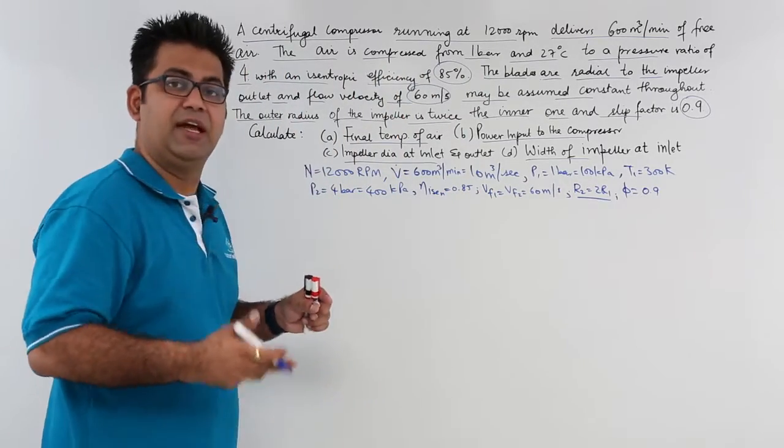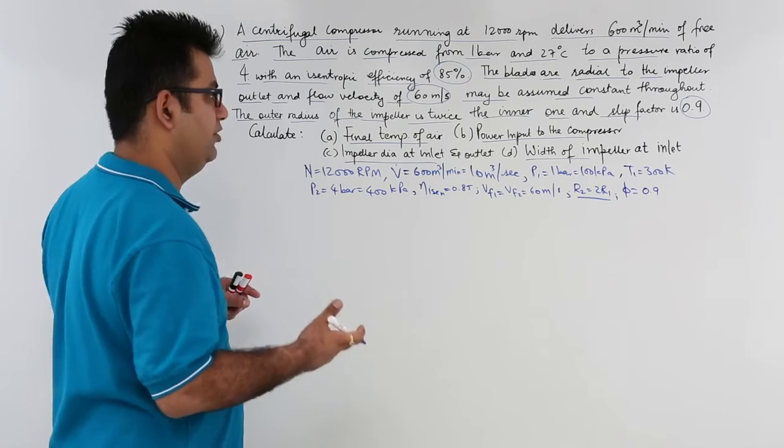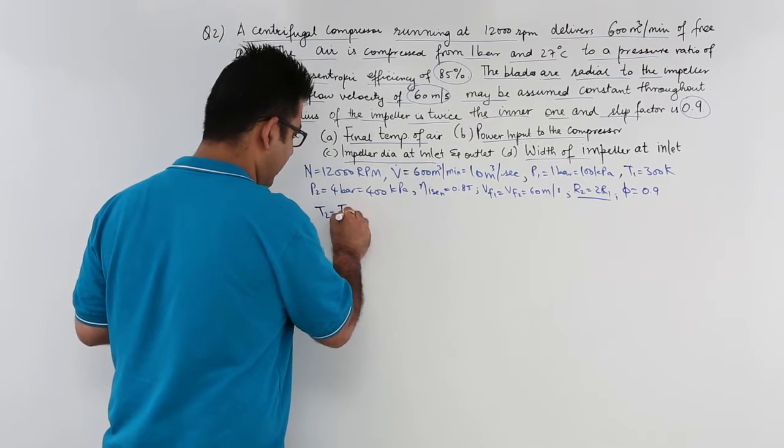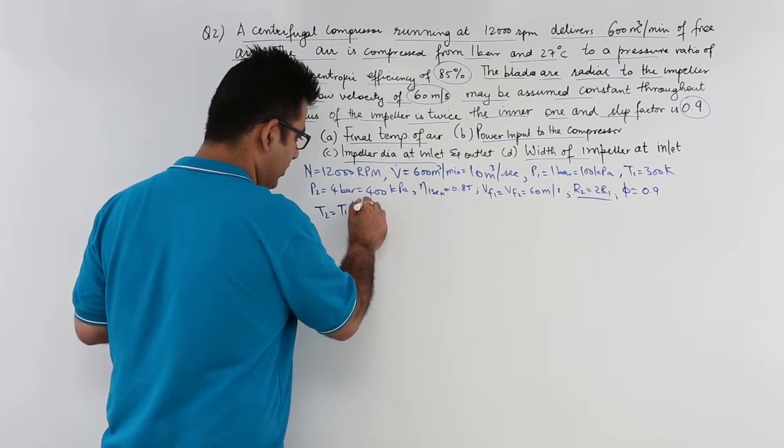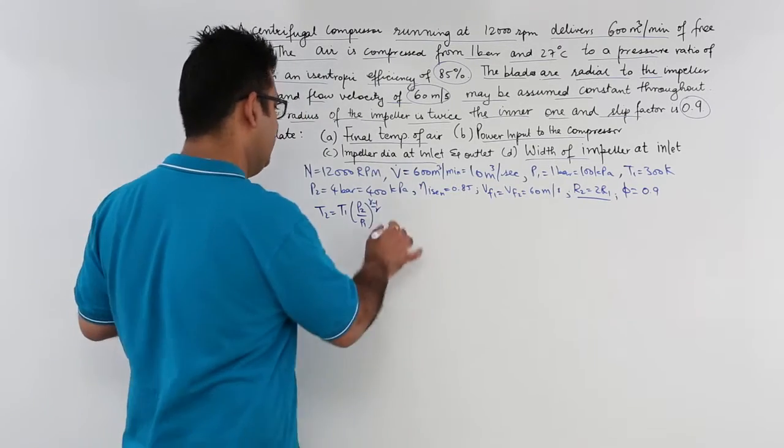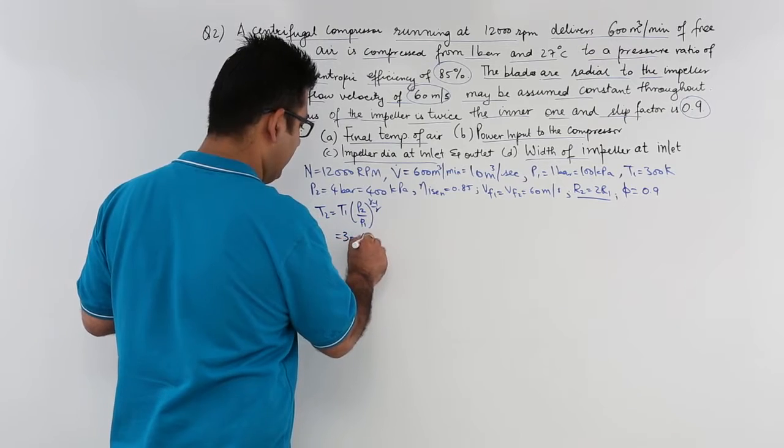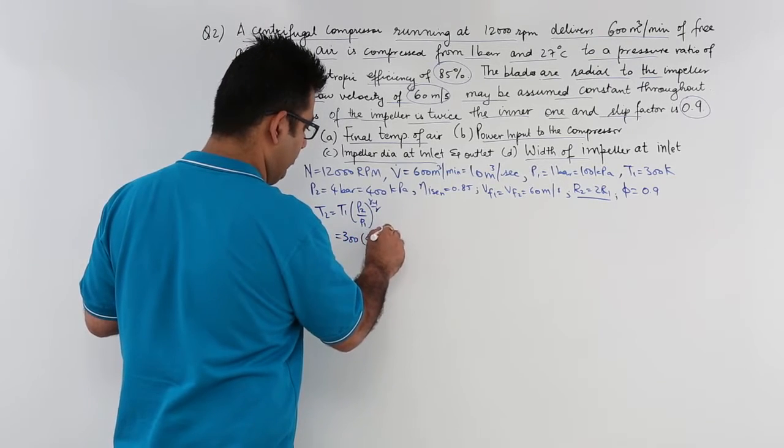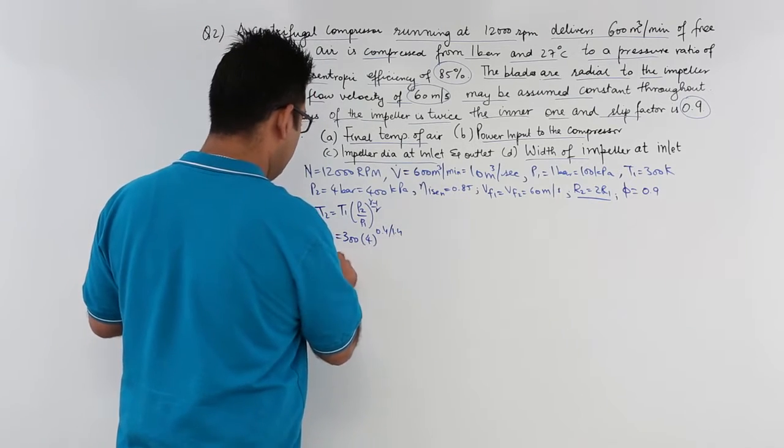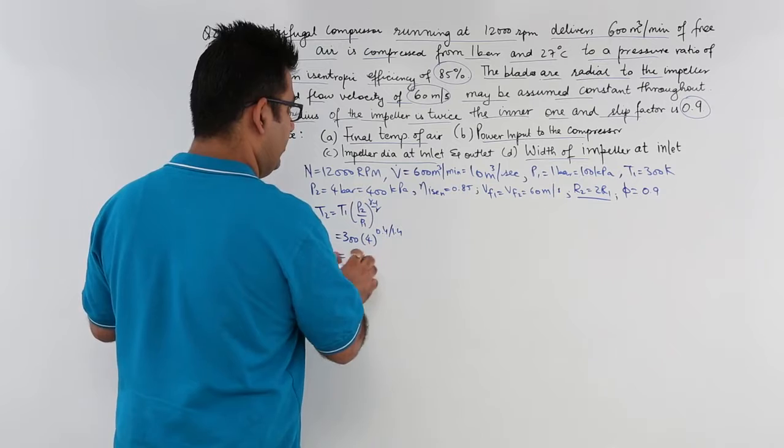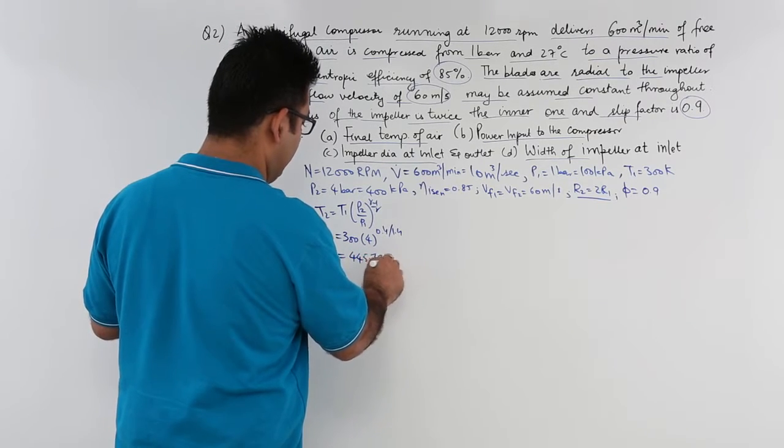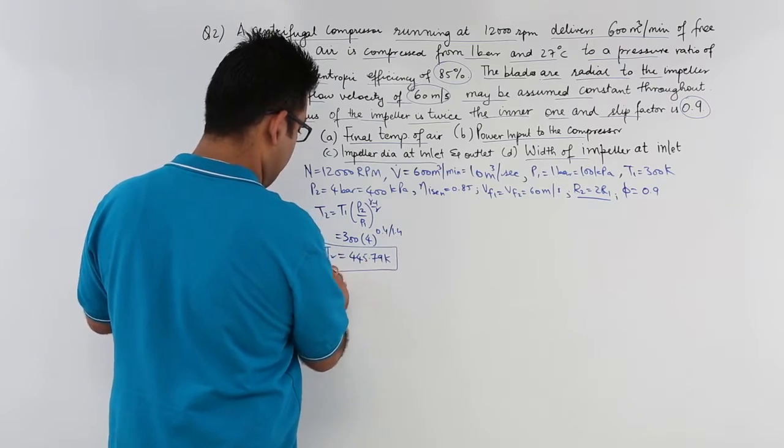Let us first of all find out the isentropic temperature of the air after compression that would be T2, and that is T1 into P2 by P1 to the power gamma minus 1 by gamma. So this would become 300 into 4 to the power 0.4 upon 1.4. This would give you T2 of around 445.79 Kelvin.